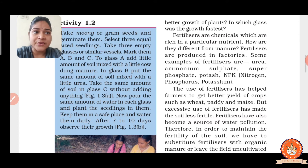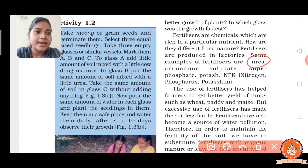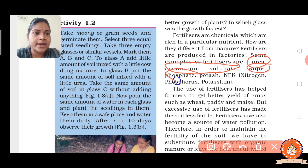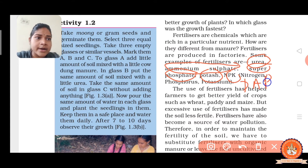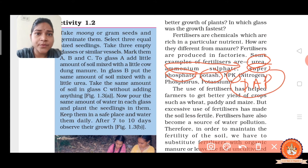Some examples of fertilizers are: urea, ammonium sulfate, superphosphate, potassium, and NPK — which stands for nitrogen, phosphorus, and potassium. One more is DAP, which stands for diammonium phosphate. So these are the examples of fertilizers.